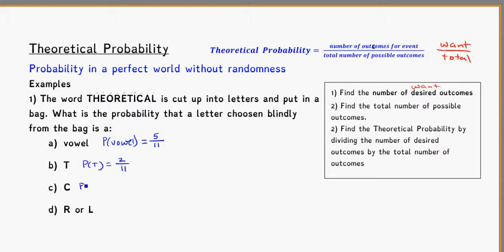Probability of getting a C. In this case, I know inside of that bag there's only one C floating around in there. So I have a probability of one out of the eleven total is going to be a C.